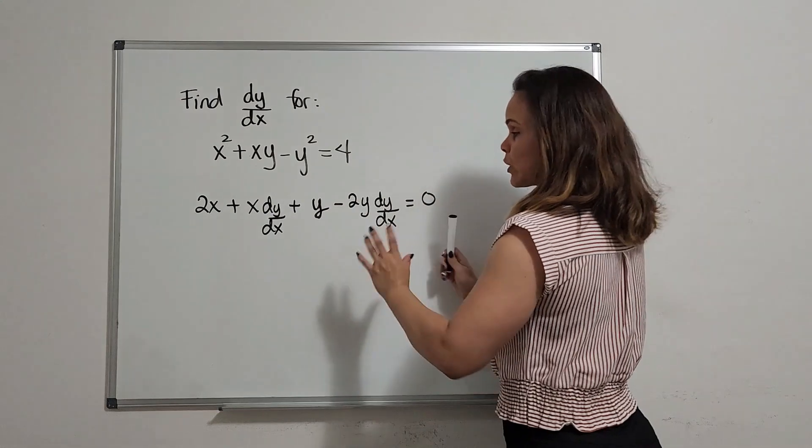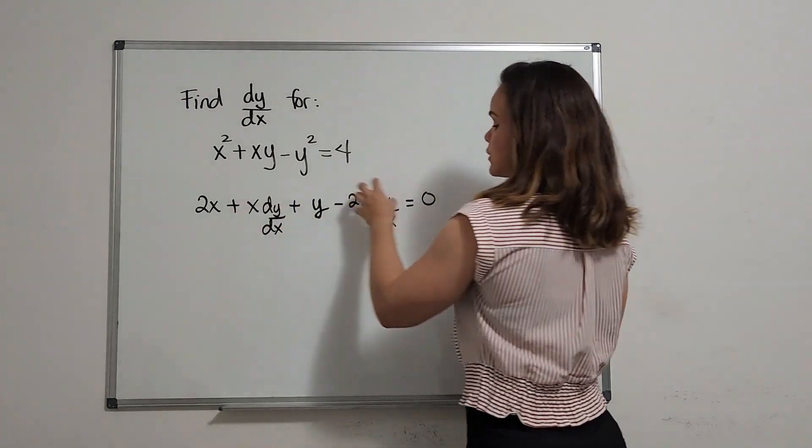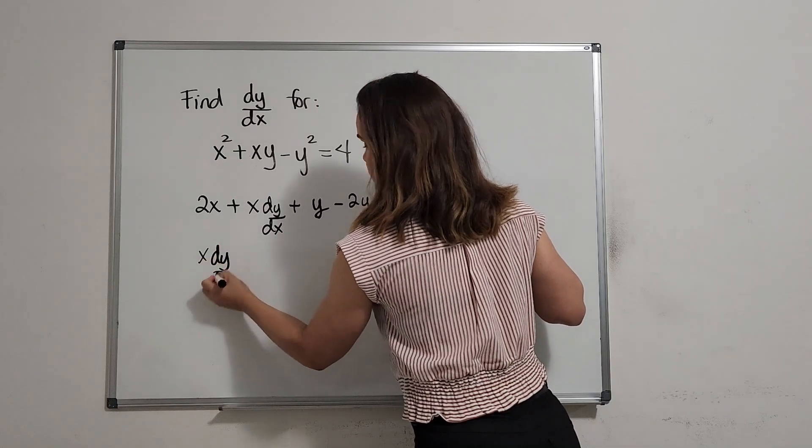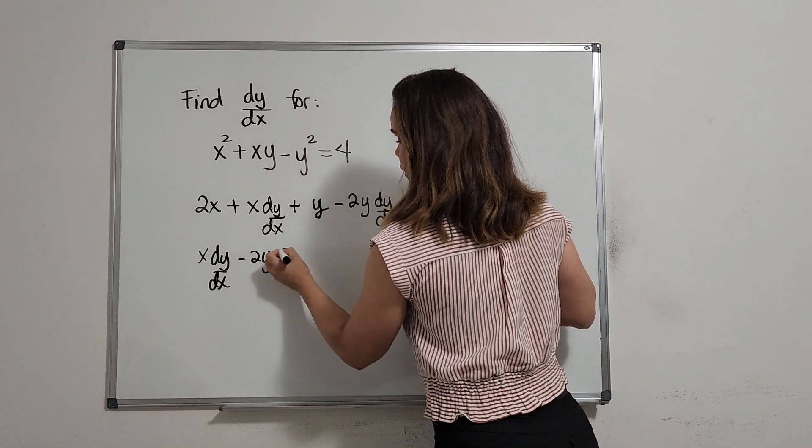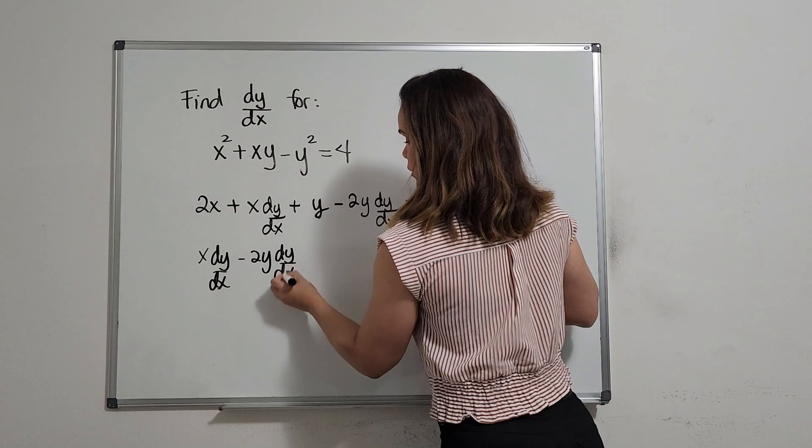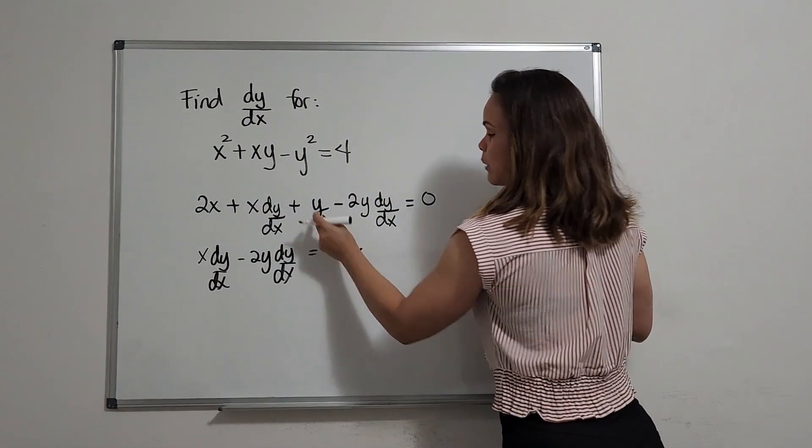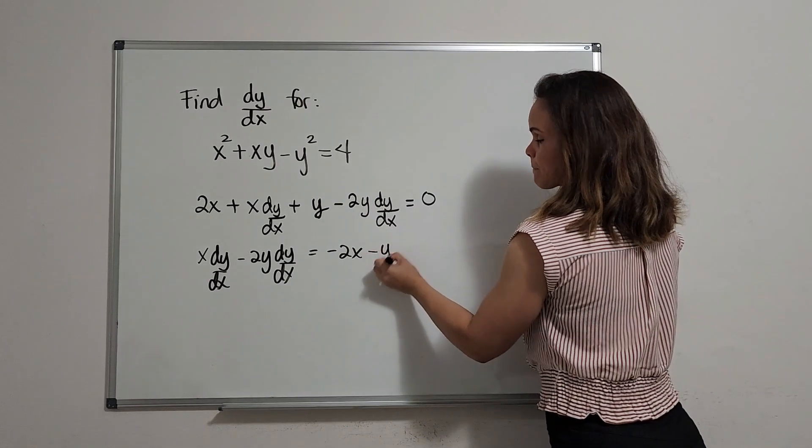We have the derivative. Then we're going to group the like terms. So we have these two as like terms. I'm going to write it here: x dy dx minus 2y dy dx. And I'm going to subtract the 2x and subtract the y. So differentiate, then grouping.